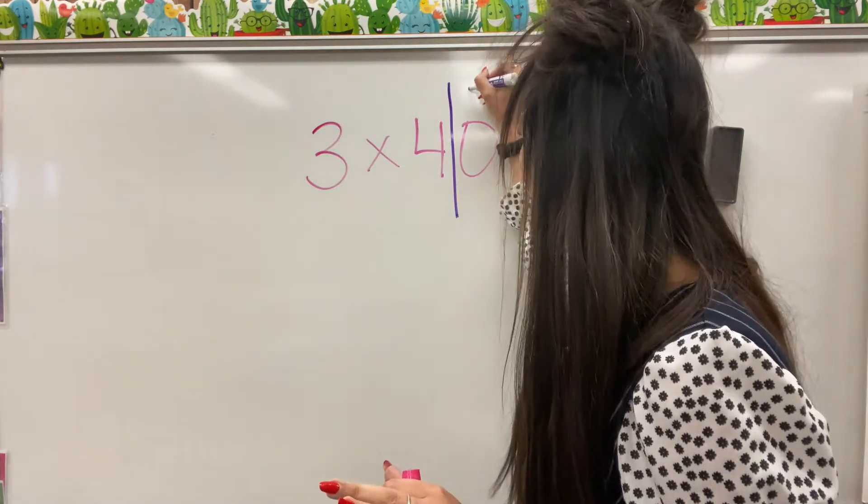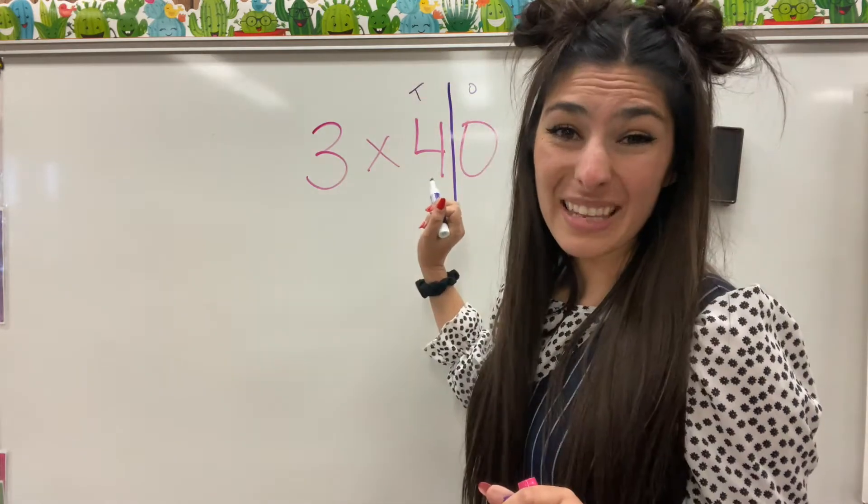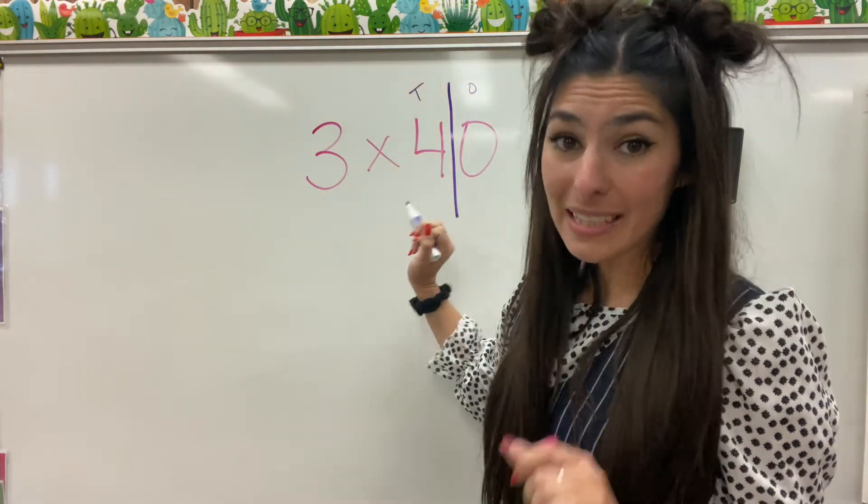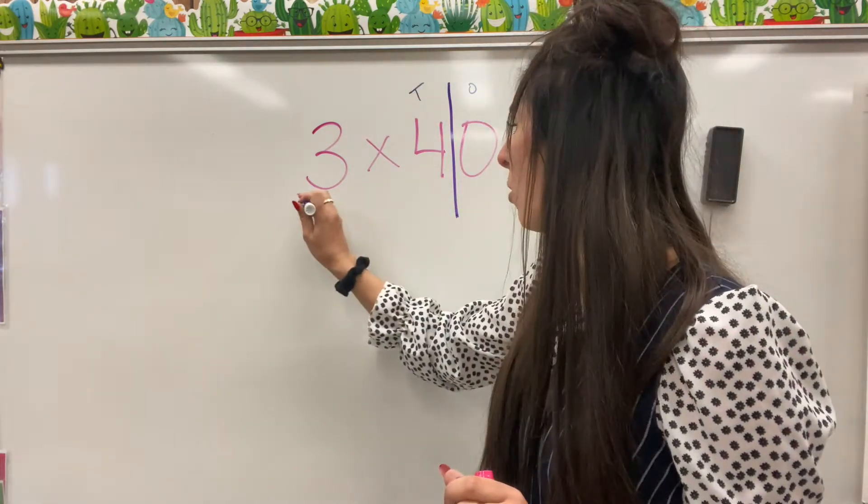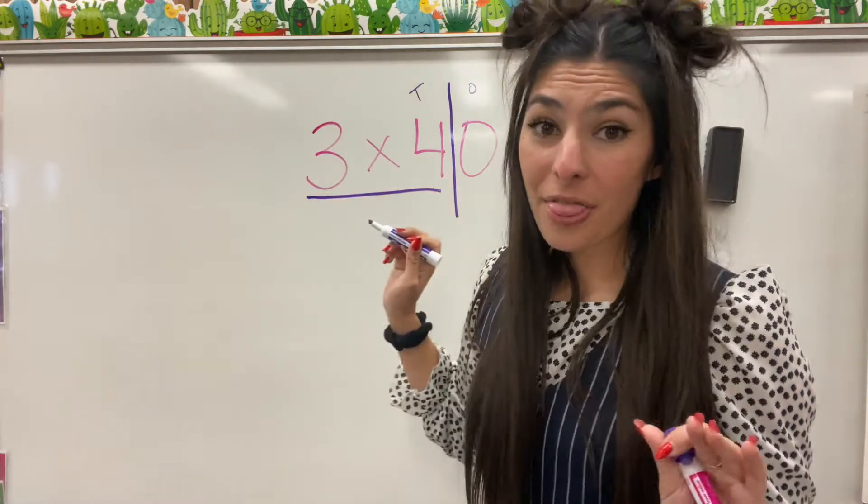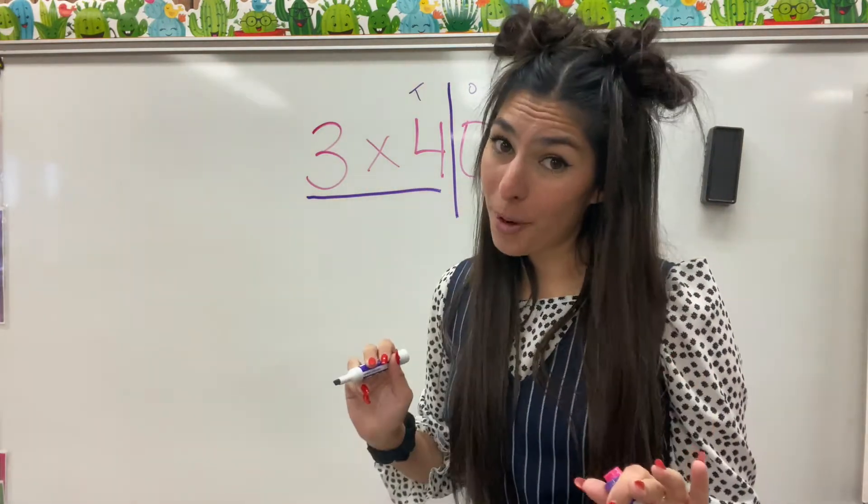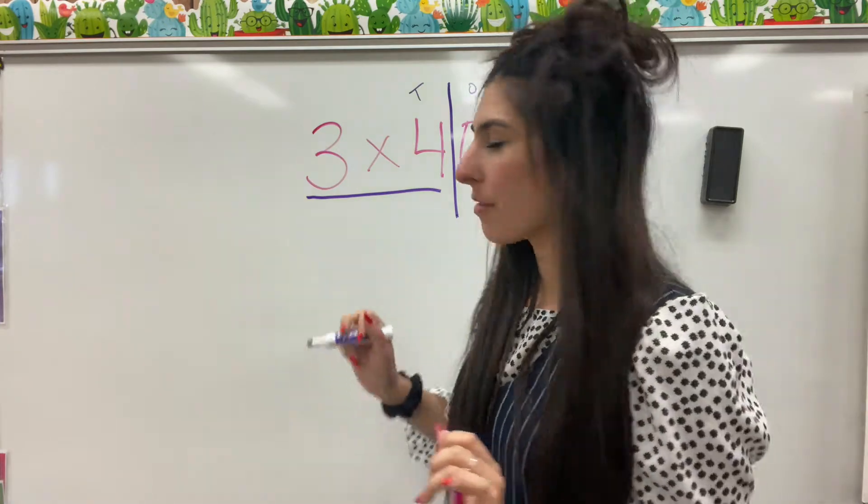Now if we actually write our 1s place and then our 10s, we'll see that there's 4 tens in the tens place. Now with this, we are only going to do 3 times 4. So what is 3 times 4? If you're not sure, let's go ahead and solve it real quick.